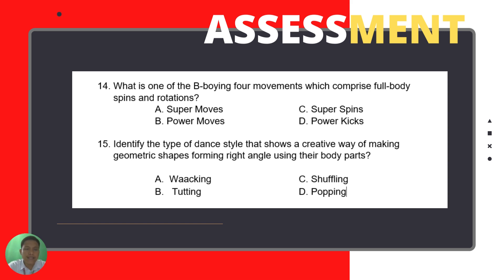And lastly, for number fifteen: Identify the type of dance style that shows a creative way of making geometric shapes forming right angles using your body parts. Is it A — waacking; B — tutting; C — shuffling; or D — popping?